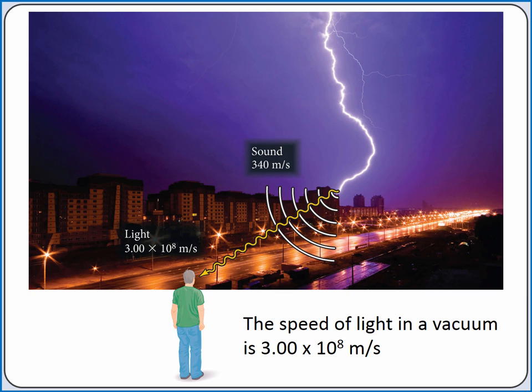Although both light and sound act as waves, light travels much faster than sound. The speed of light in a vacuum is constant, traveling 3 times 10 to the 8th meters per second. The speed of sound is only about 340 meters per second. This is why you can see lightning before you hear thunder.